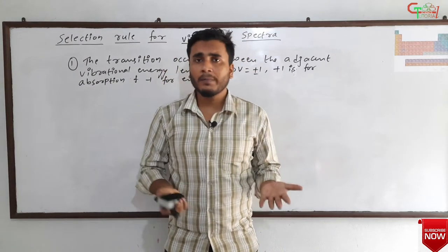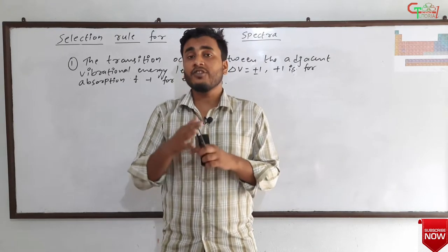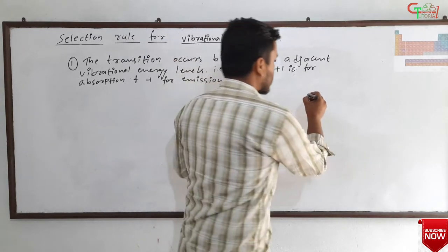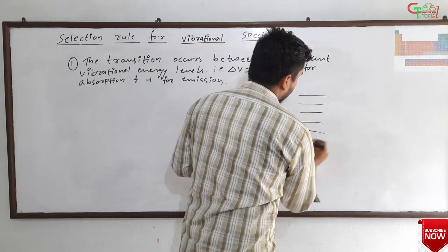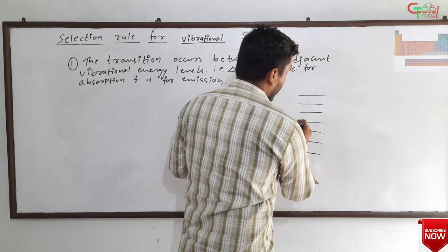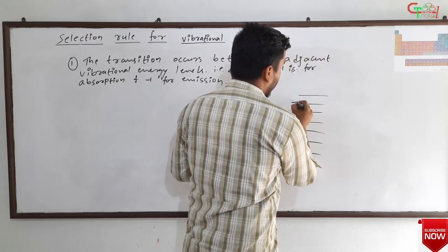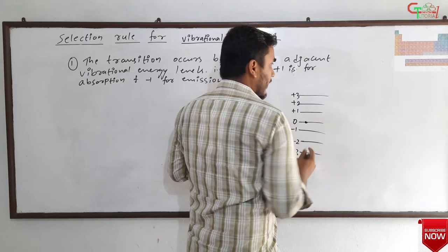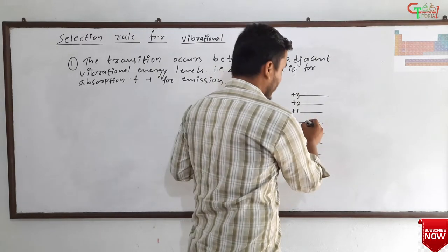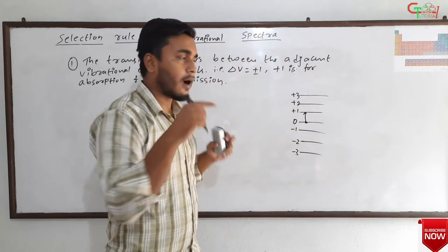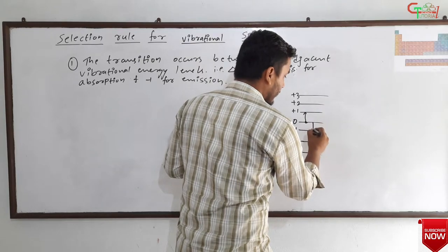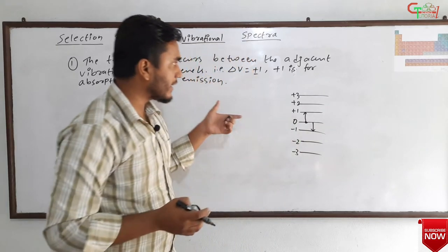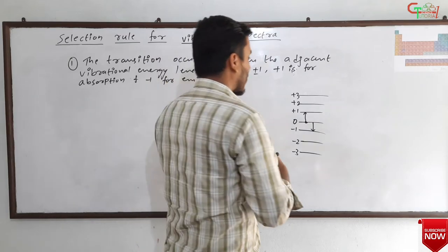This is the first rule that needs to be followed by the molecule in order to form vibrational spectra — the transition will occur only between adjacent vibrational energy levels. To understand this by diagram: suppose these are vibrational energy levels at v = 0, +1, +2, +3, -1, -2, -3. If the molecule is at one level and gets energy, it must transit to only one energy level up; if it loses energy, it must go one energy level down.